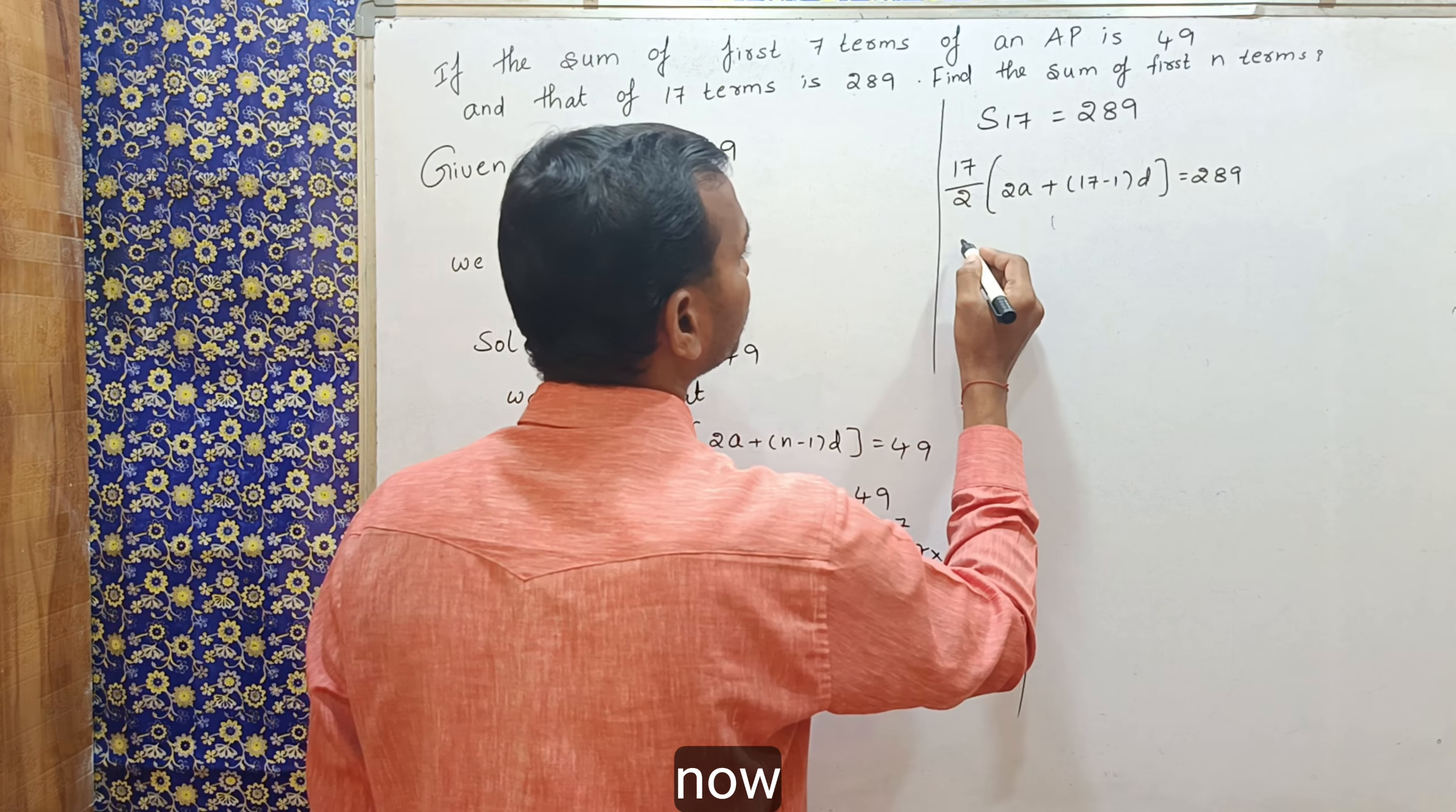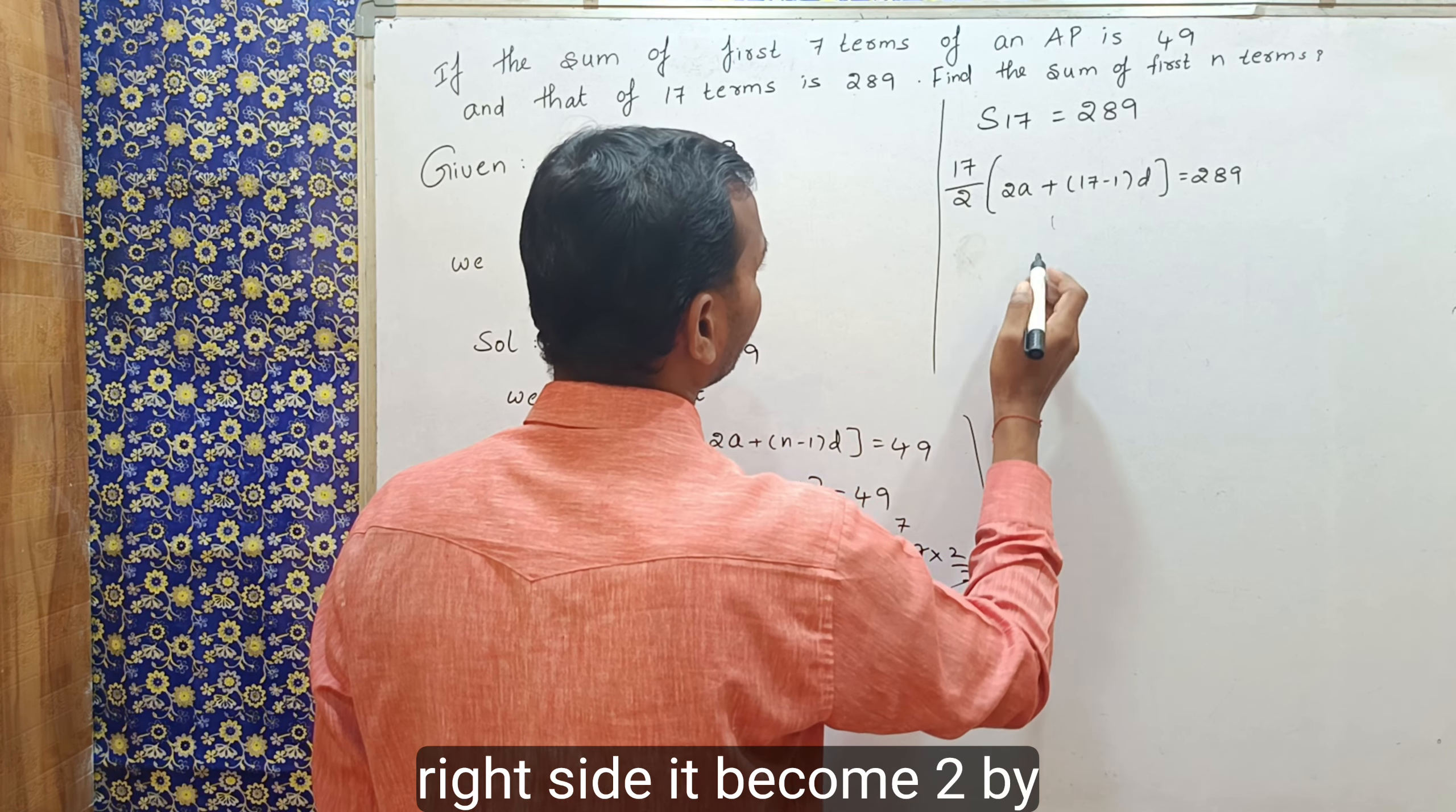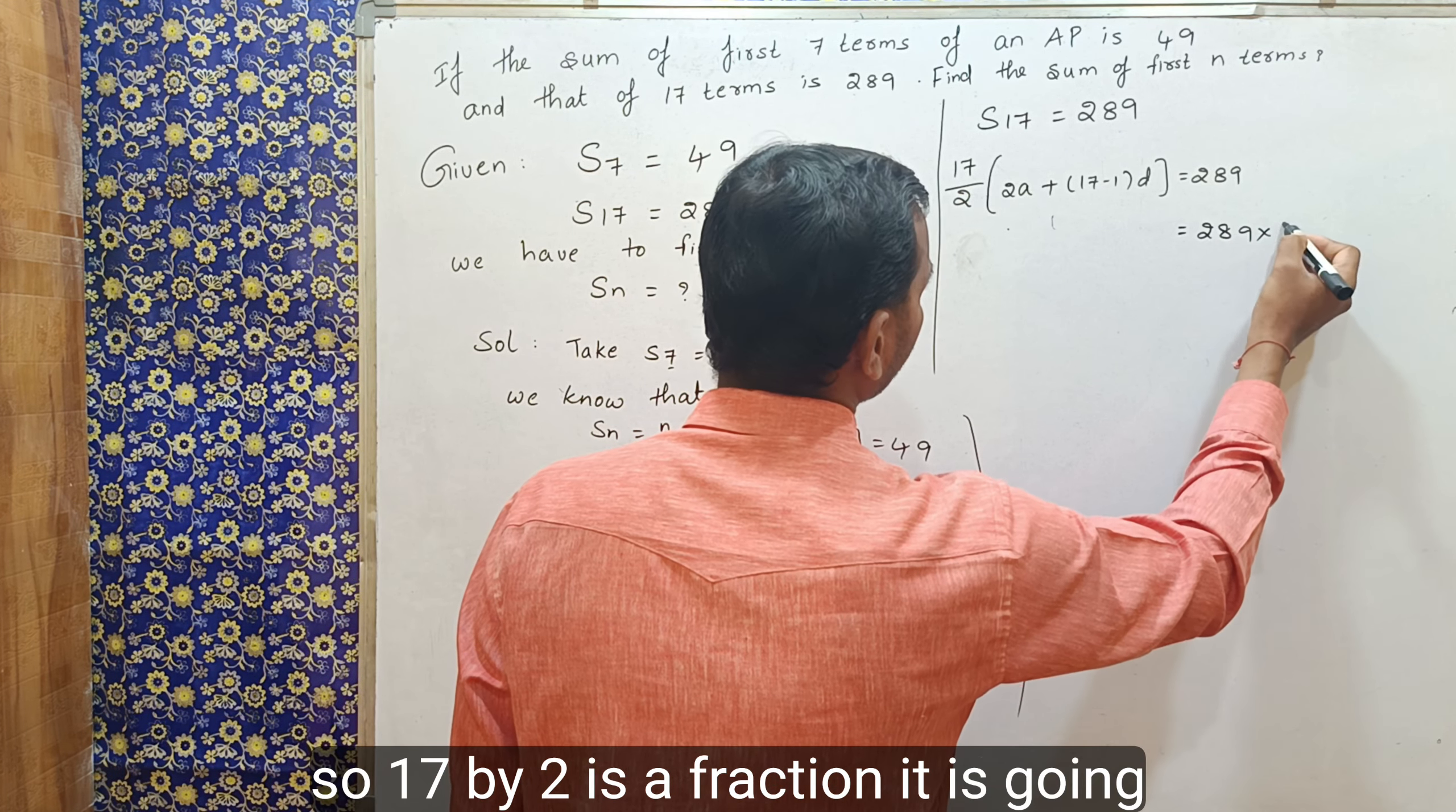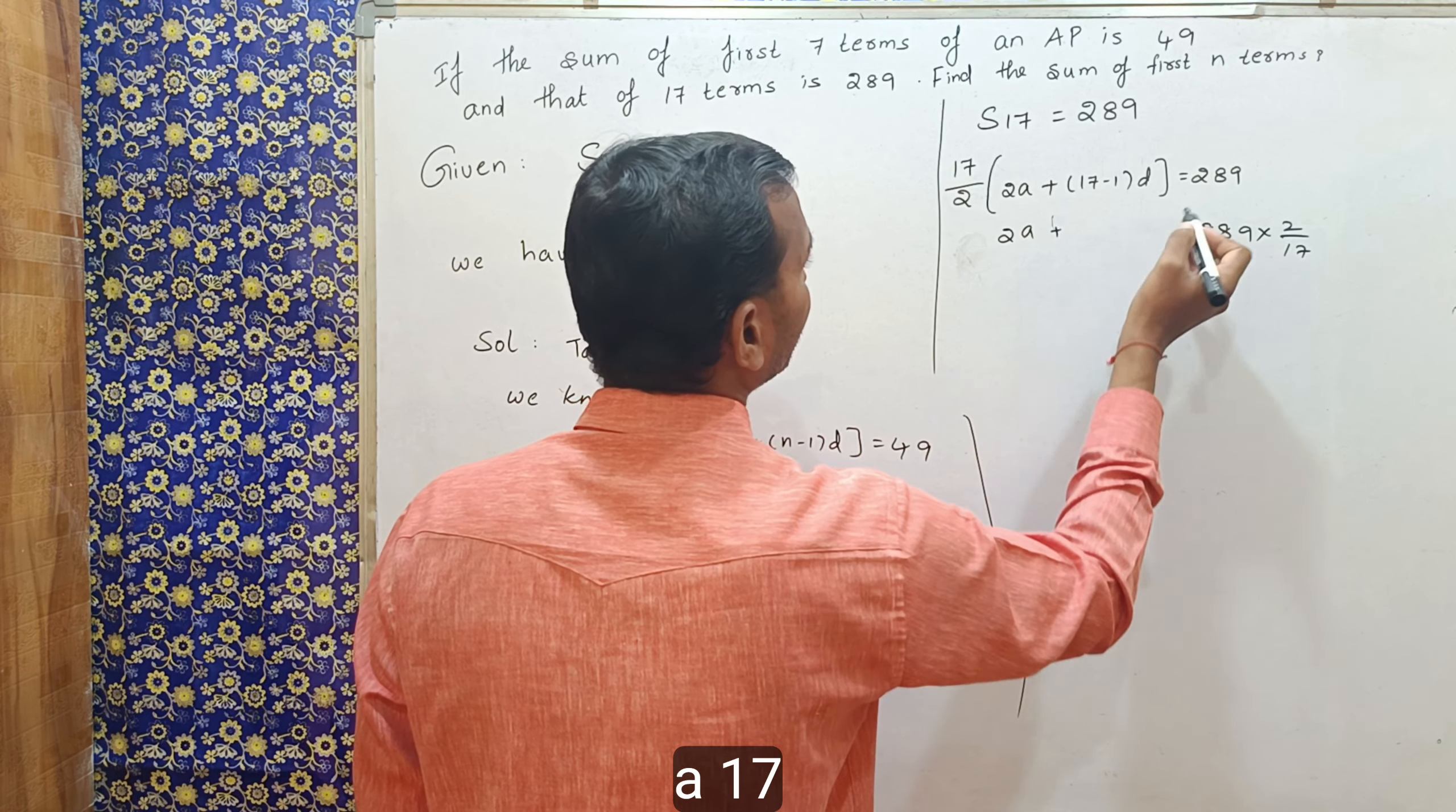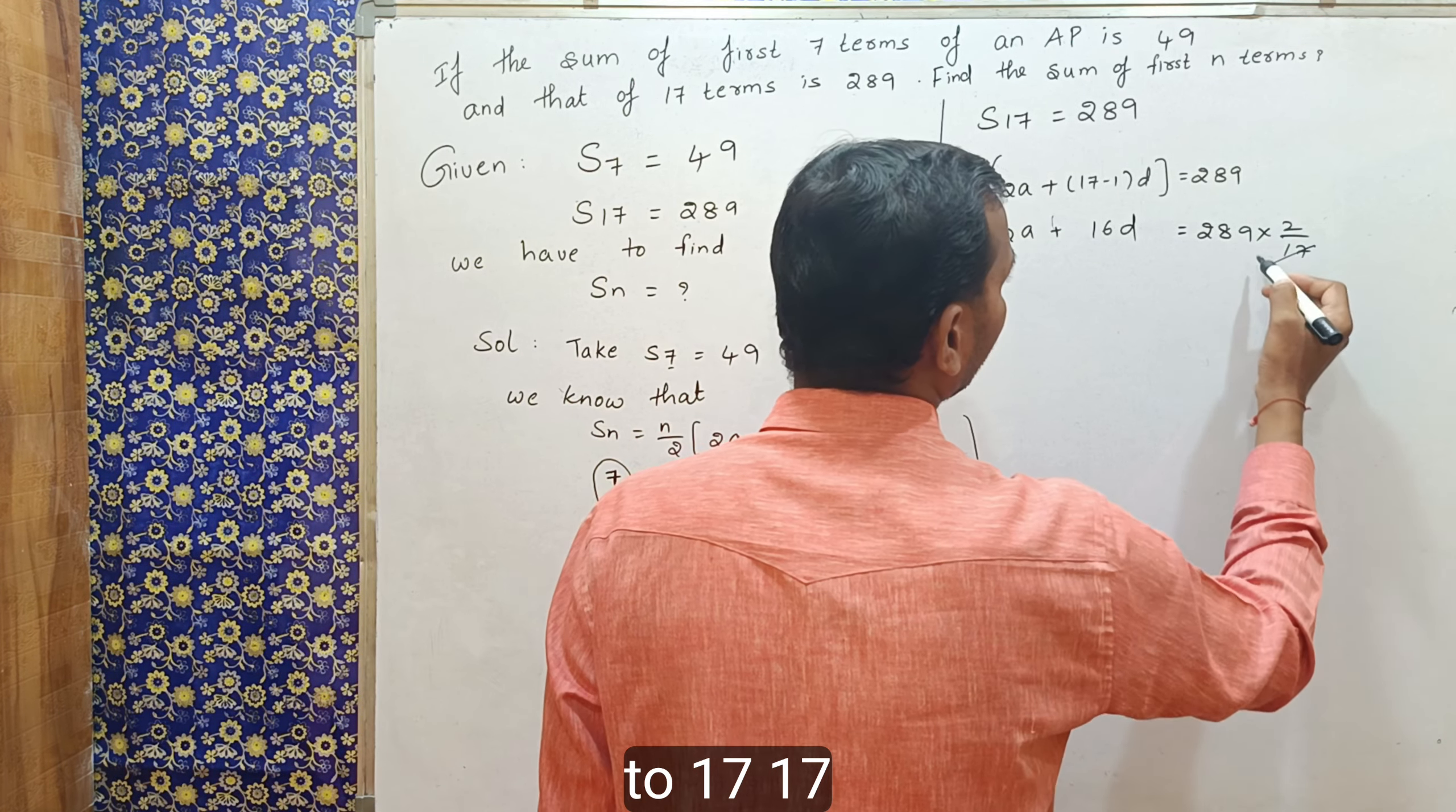So, now, 17 by 2 is going to right side. It becomes 2 by 17. Now, 17 by 2 is a fraction, it is going to right side become 2 by 17. Now, here, 2a, 17 minus 1 is nothing but 16d.